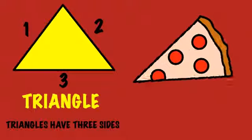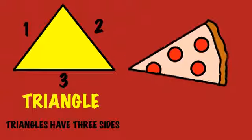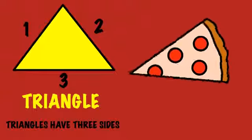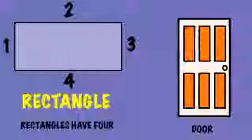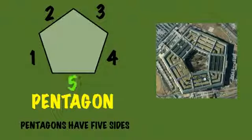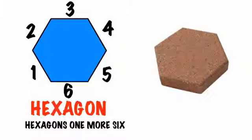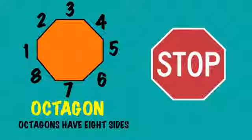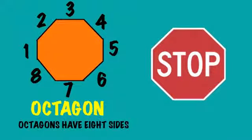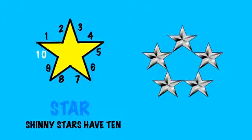Triangles have 3 sides. Rectangles have 4. Pentagons have 5 sides. Hexagons have 6. Octagons have 8 sides. Shiny stars have 10.